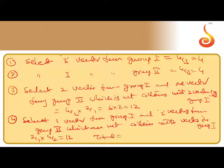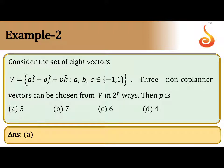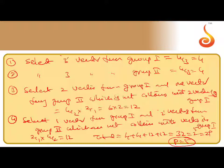So the total number of selections of three non-coplanar vectors is 4 + 4 + 12 + 12 = 32, which is 2^5. They are given as 2^p. Therefore, p = 5 is the answer.